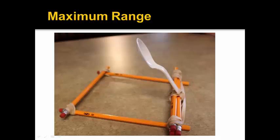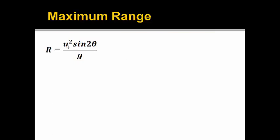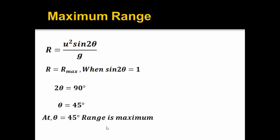Now the range will be maximum at a certain angle. Let us derive an expression for it. We know the expression for range is u² sin2θ / g. So range will be maximum when sin2θ equals 1, which implies that when 2θ equals 90 degrees, that is when θ equals 45 degrees, range will be maximum. So if you launch a projectile in oblique projection at an angle of 45 degrees with the horizontal, then it will cover the maximum distance.